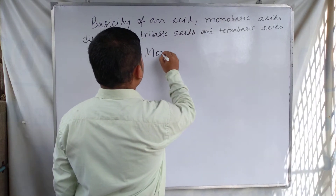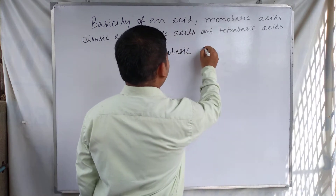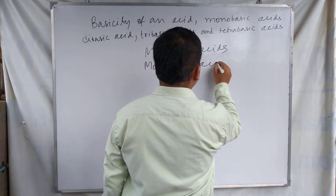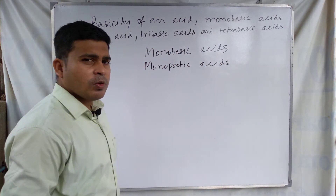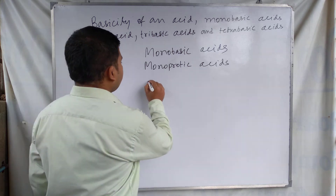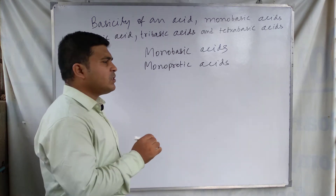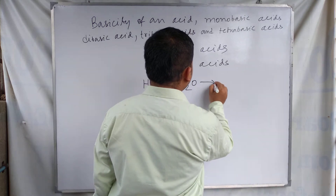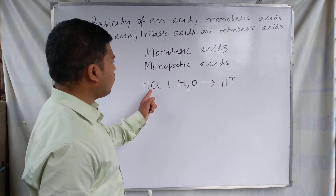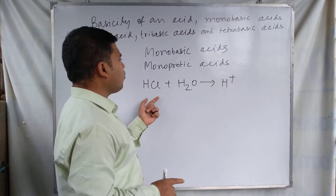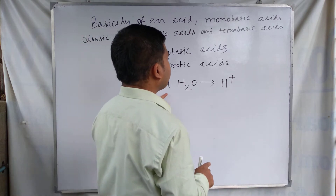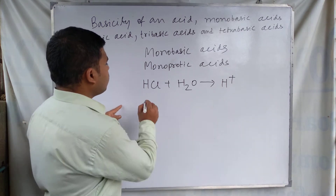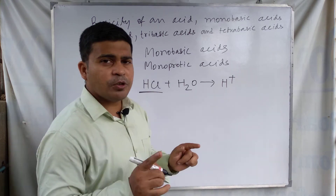A monobasic acid can produce only one H⁺ ion in its aqueous solution. For example, HCl when dissolved in water forms one H⁺ ion. It has one H⁺ ion in its molecule, so in aqueous solution it can produce one H⁺ ion, and for this reason HCl is called a monobasic acid.